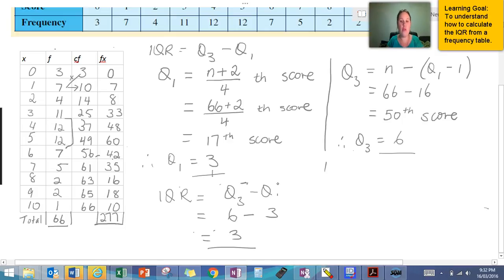And therefore our interquartile range is 3, and that's how you find interquartile range. Thanks very much guys.